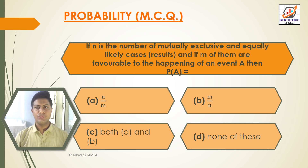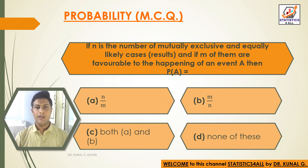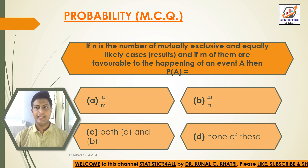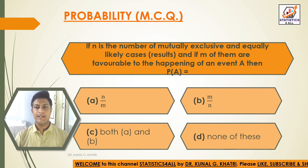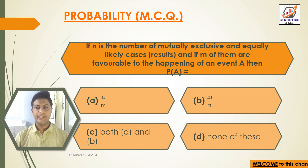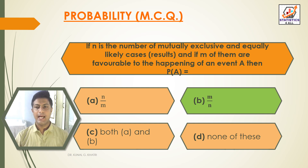Question 5: If N is the number of mutually exclusive and equally likely cases (results), and if M of them are favorable to the happening of an event A, then P(A) equals? Option A: N/M. Option B: M/N. Option C: Both A and B. Option D: None of these. Answer: Option B — M divided by N. P(A) = M/N.